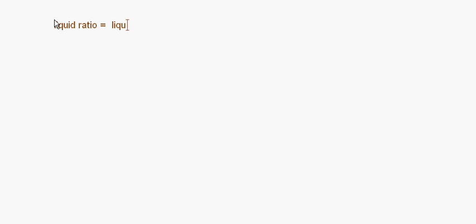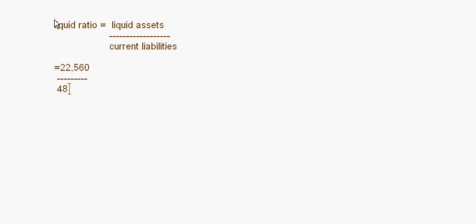To compute the liquid ratio, the formula is Liquid Assets divided by Current Liabilities. So it is 22,560 upon 48,000, which equals 0.47:1. The liquid ratio is 0.47:1.